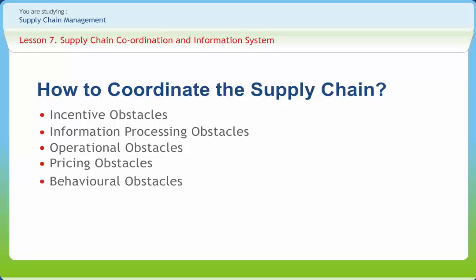The supply chain structure and the communication between different stages are problems that are often related to behavioral obstacles. There are a number of steps that can be taken by management in the supply chain to increase coordination and moderate the bullwhip effect. Building trust and cooperation in strategic partnerships are perhaps the most critical requirements to remove behavioral obstacles.